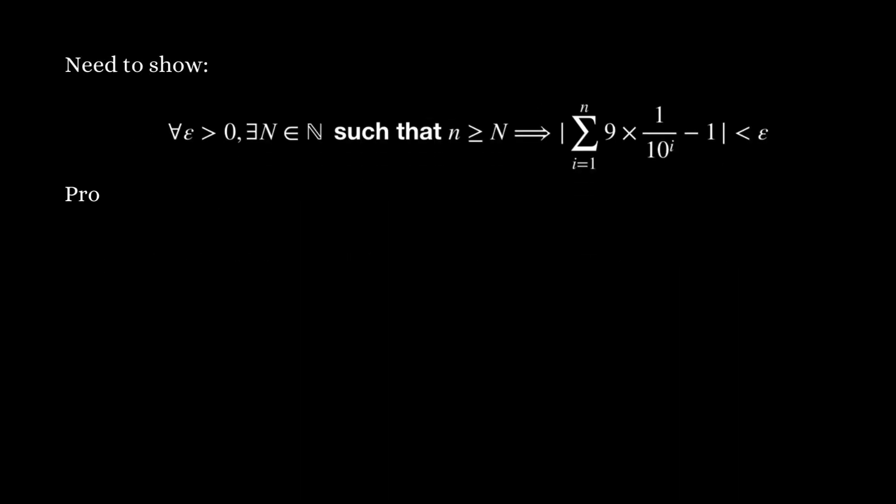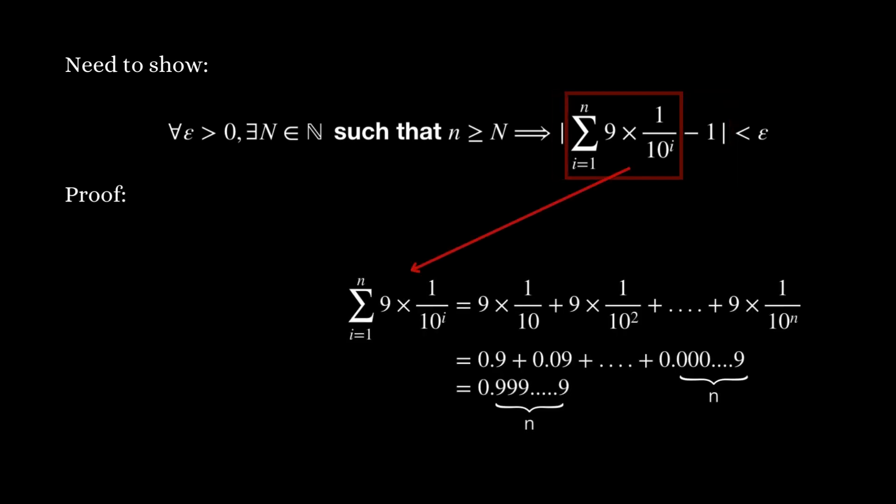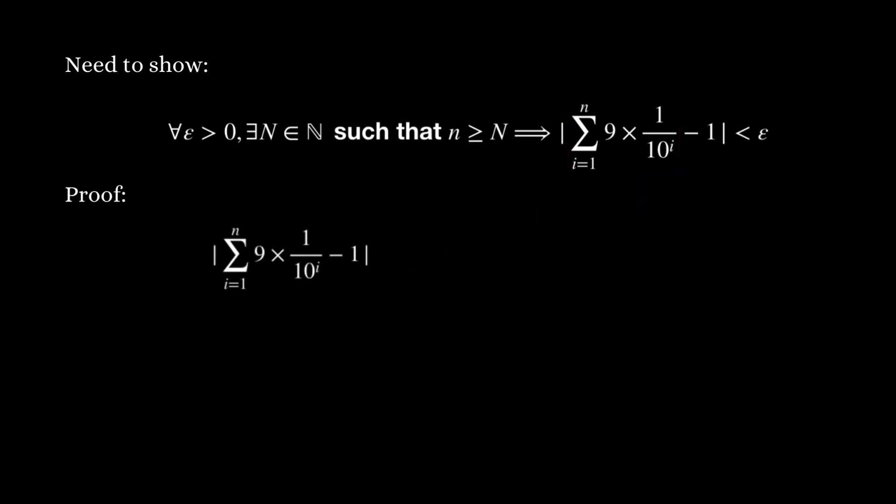First, let's rewrite what's inside the absolute value symbol. As we showed earlier, this expression is exactly 0.9 with n 9s after the decimal point. Therefore, the absolute value of 1 minus it is equal to 1 over 10 to the n.